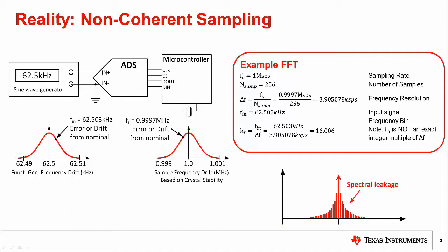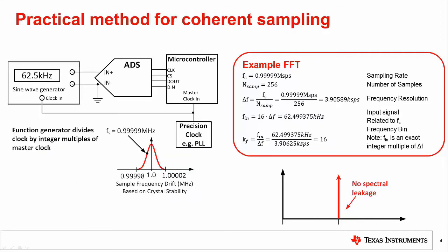In the next slide, we will see how a more sophisticated system can be used to achieve coherent sampling. One way to achieve coherent sampling in a practical system is to synchronize the frequency of the microcontroller with the signal generator. Thus, the error in the microcontroller sampling rate will track and cancel the error in the function generator, so that the input frequency will always remain an integer multiple of the frequency resolution, even when the clock drifts. So the clock from the microcontroller is also applied to a sync input on the signal generator.